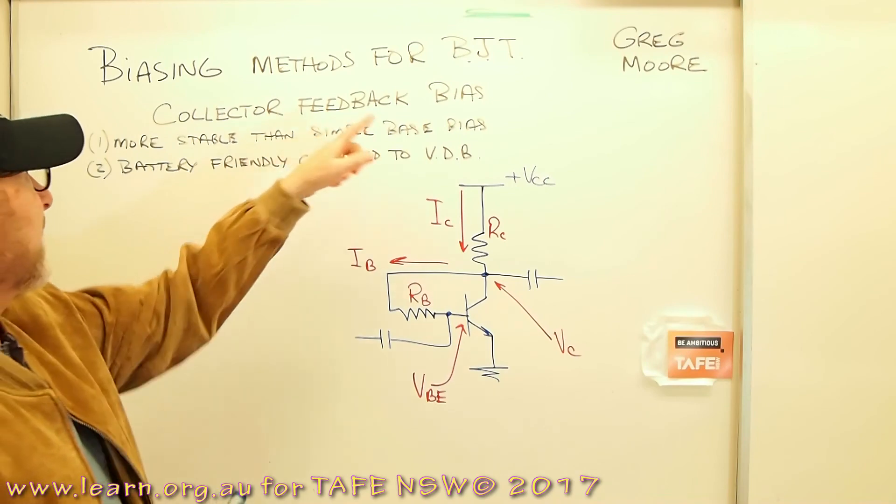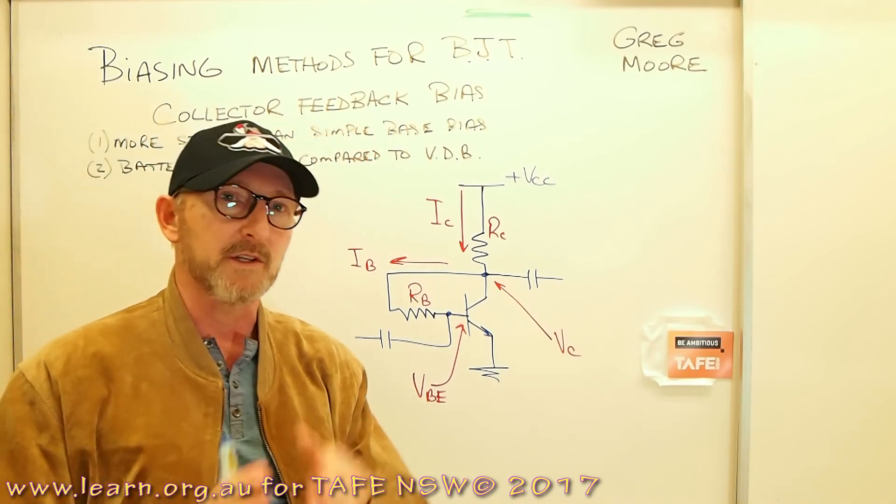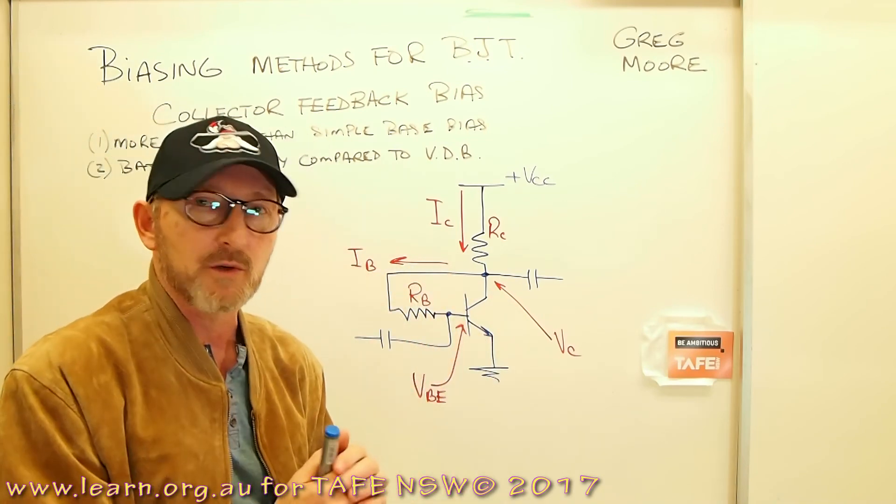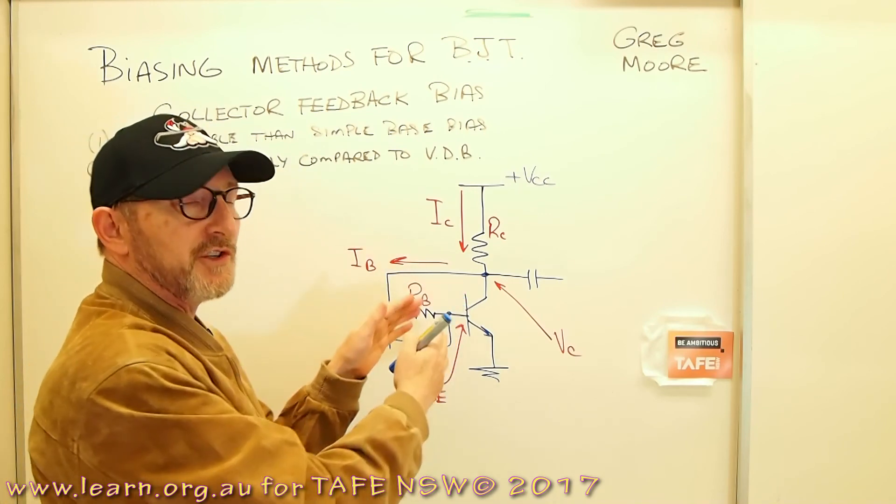Collector feedback bias, it's more stable than simple base bias for those reasons that we just talked about and I'll explain why shortly. I'll show what happens as the voltage at the base tries to shift.